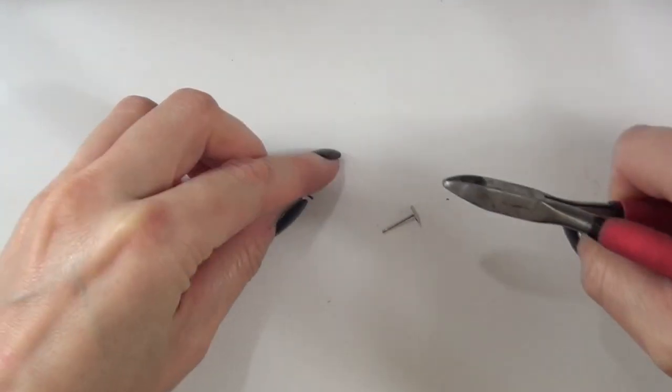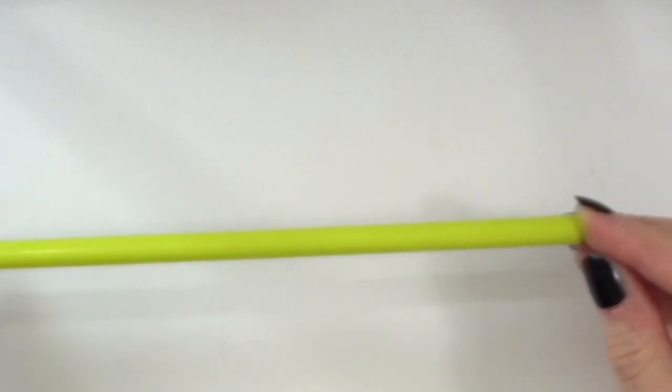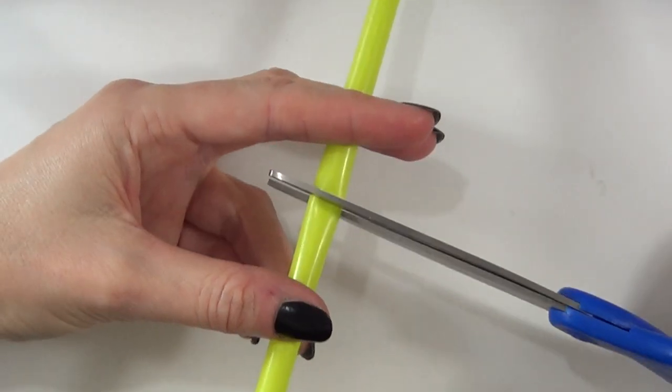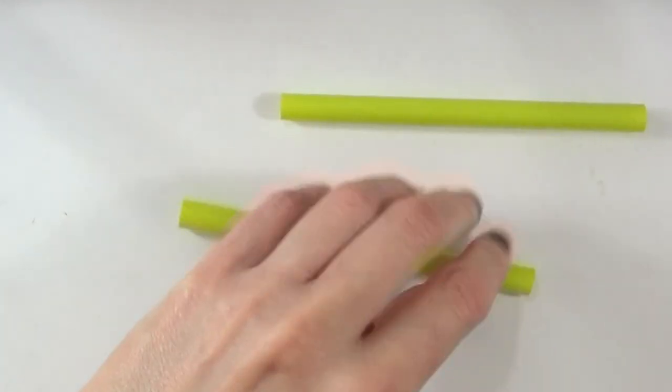So I'm just going to be left with this part. Then I'm going to be using a straw, and I'm going to cut this in half. Choose whatever thickness of straw that you have or want, but the thicker the straw, the thicker your snake is going to be.